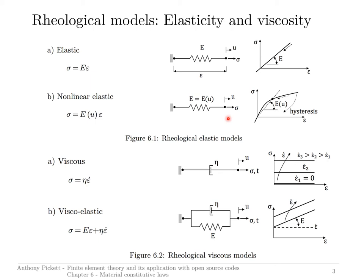The next behavior shown is viscous behavior. In this case, you have a relationship between stress and strain rate, where this is the viscosity of the material characterized by this dashpot. This could apply for many polymers. They have a very stiff behavior, but then at some point, as the molecular structure starts to move, stretch and move over each other, you get a relaxation, a deformation behavior of the material.